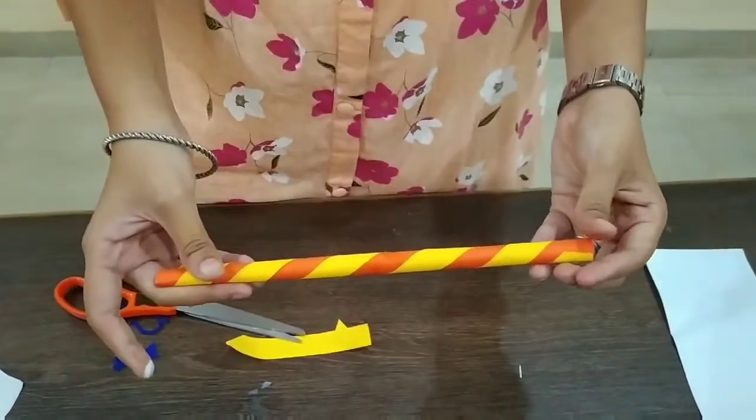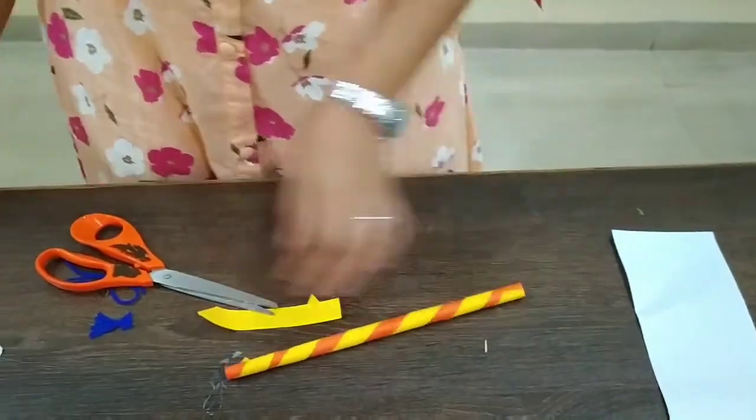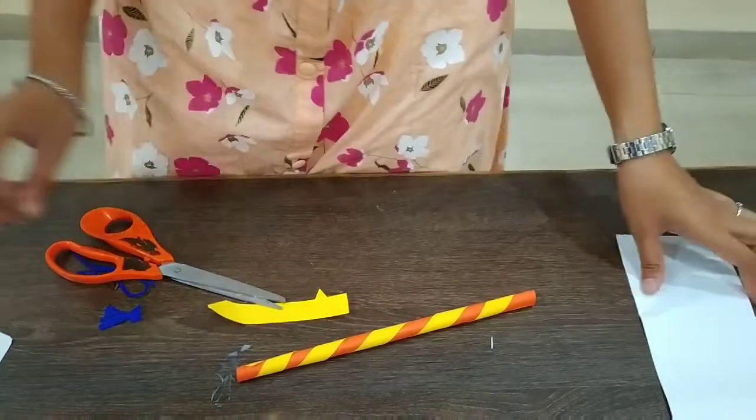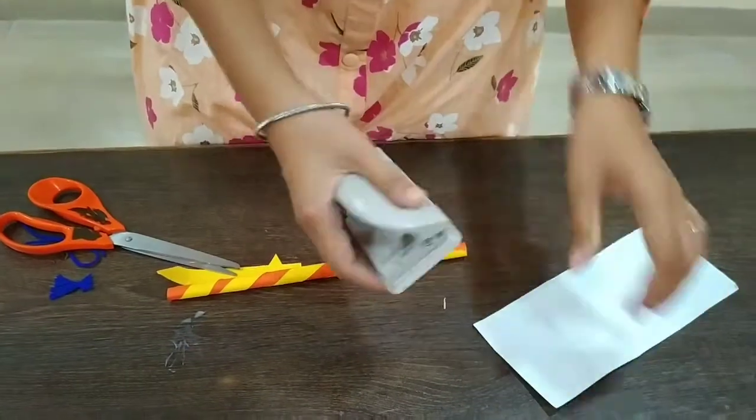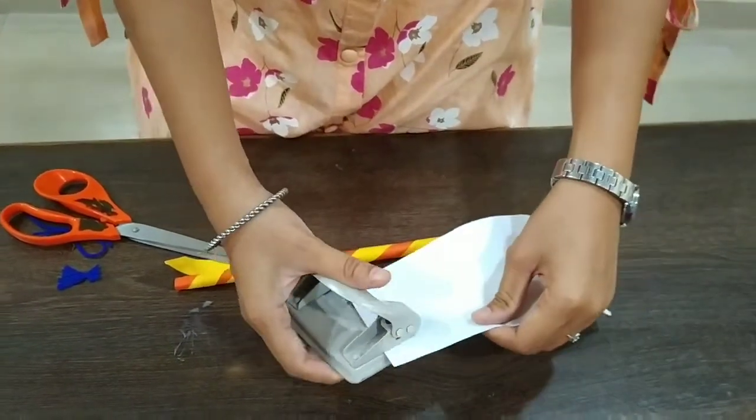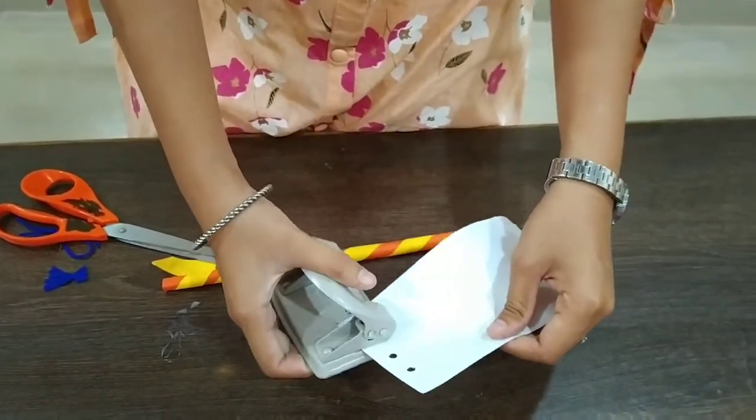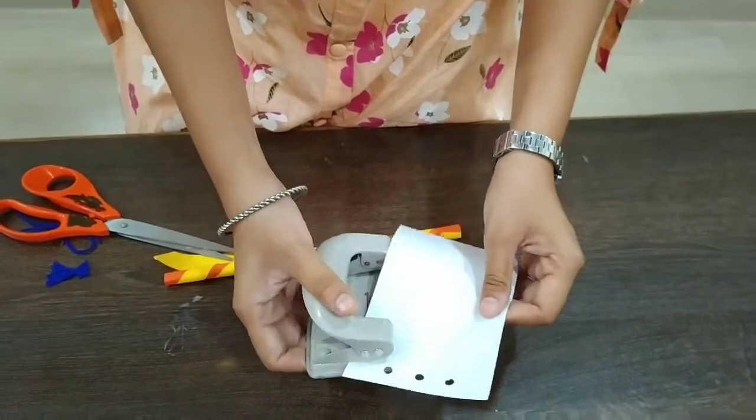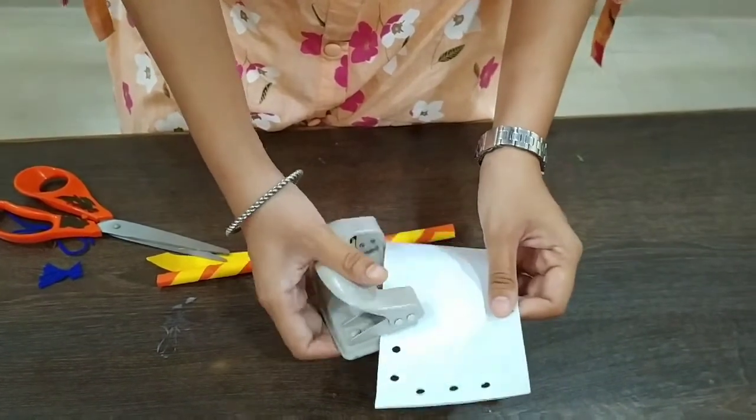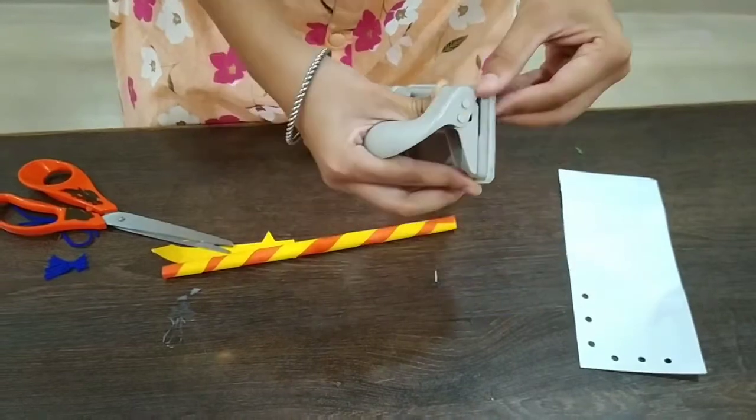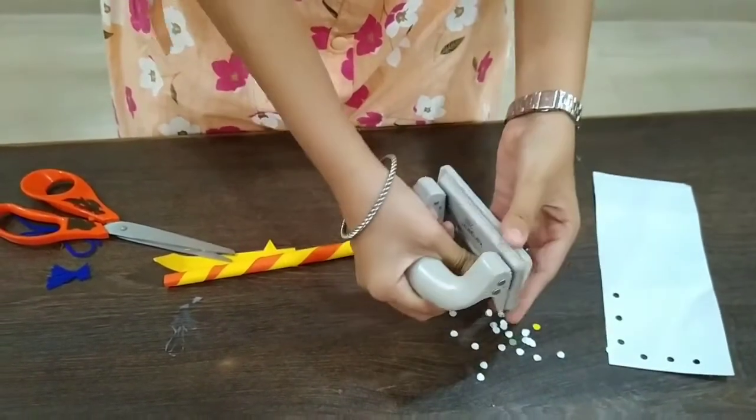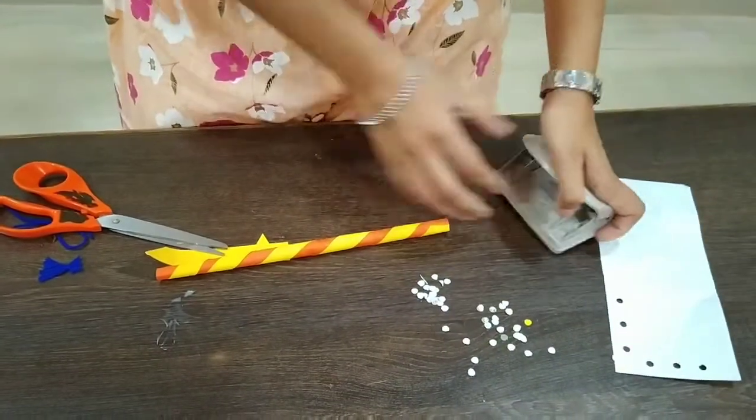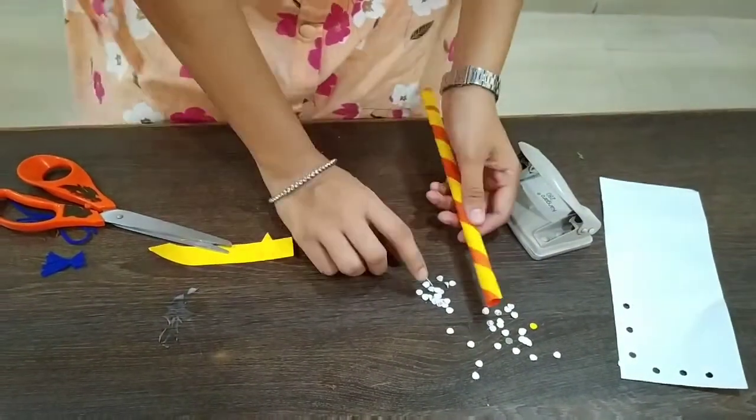This way, okay. Now we are going to take a white paper. Please take white paper from your home and we are going to punch six holes. Yes, now let's remove the punched paper.